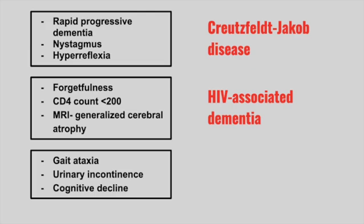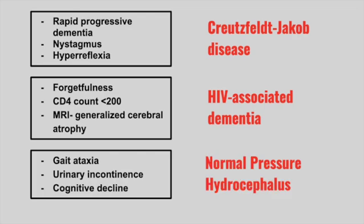Next is a patient with gait ataxia, urinary incontinence, and cognitive decline. This is normal pressure hydrocephalus. You want to think about the mnemonic: wacky, wobbly, wet.